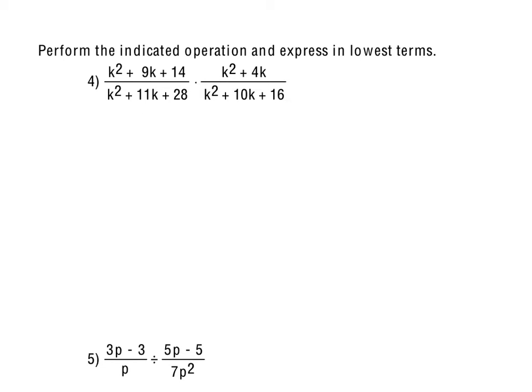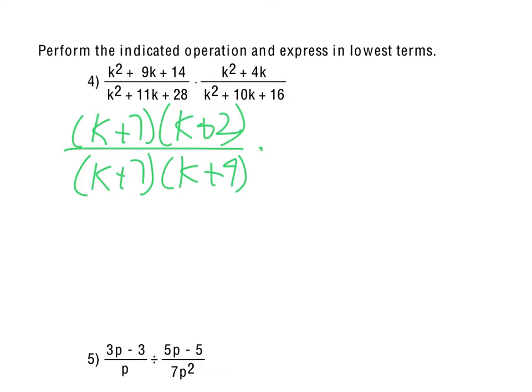So looking at that, the k squared plus 9k plus 14, we would factor that as k plus 7 times k plus 2. And the k squared plus 11k plus 28 would be k plus 7 and k plus 4. Already notice we got some k plus 7's there that will cancel out.